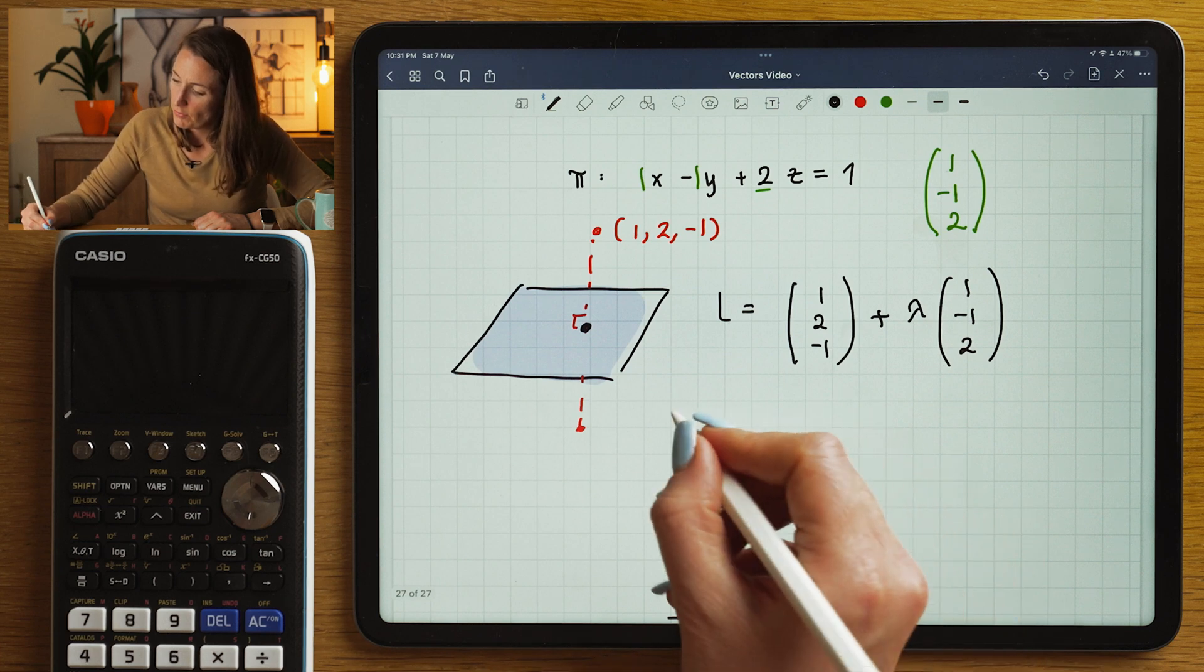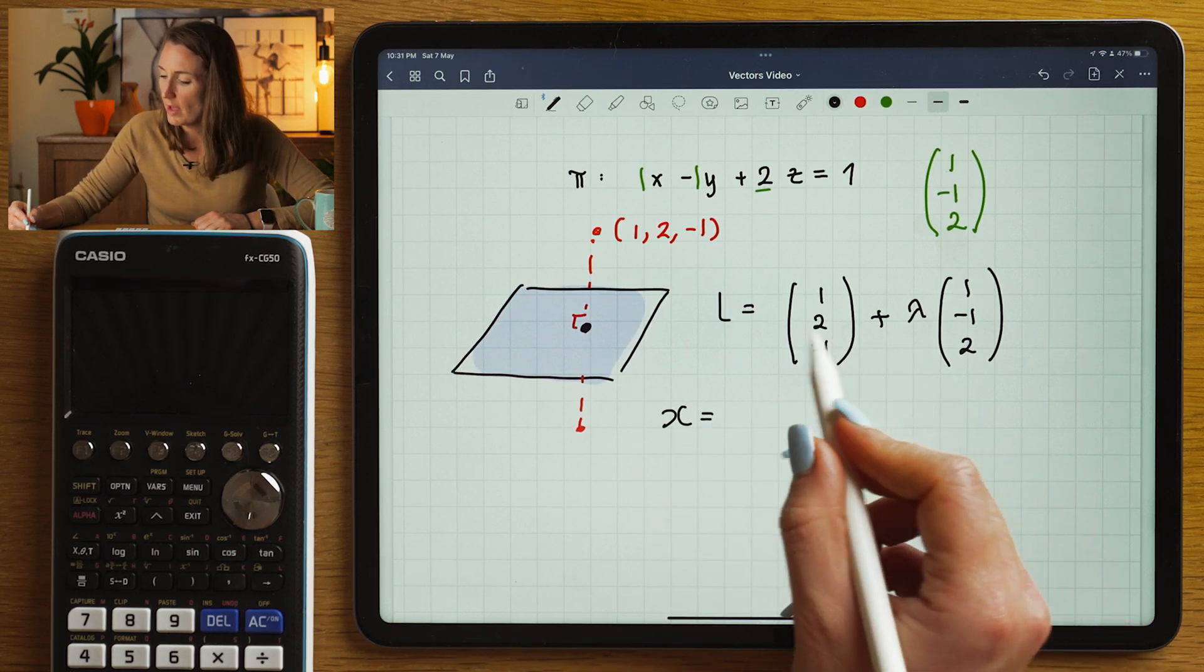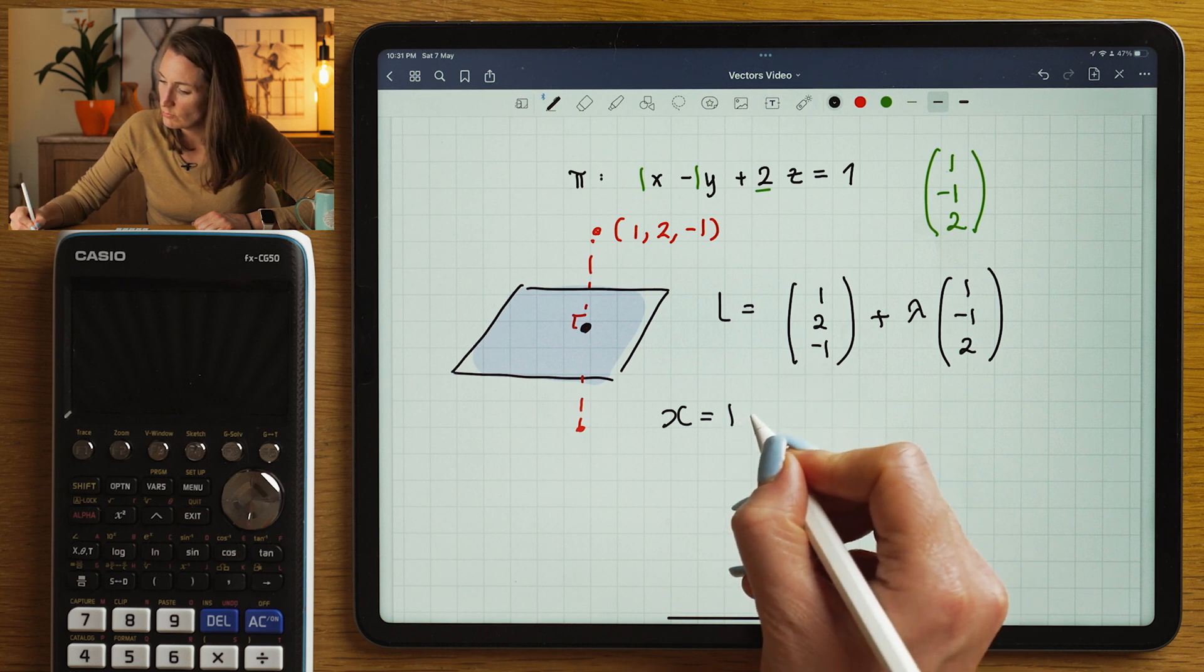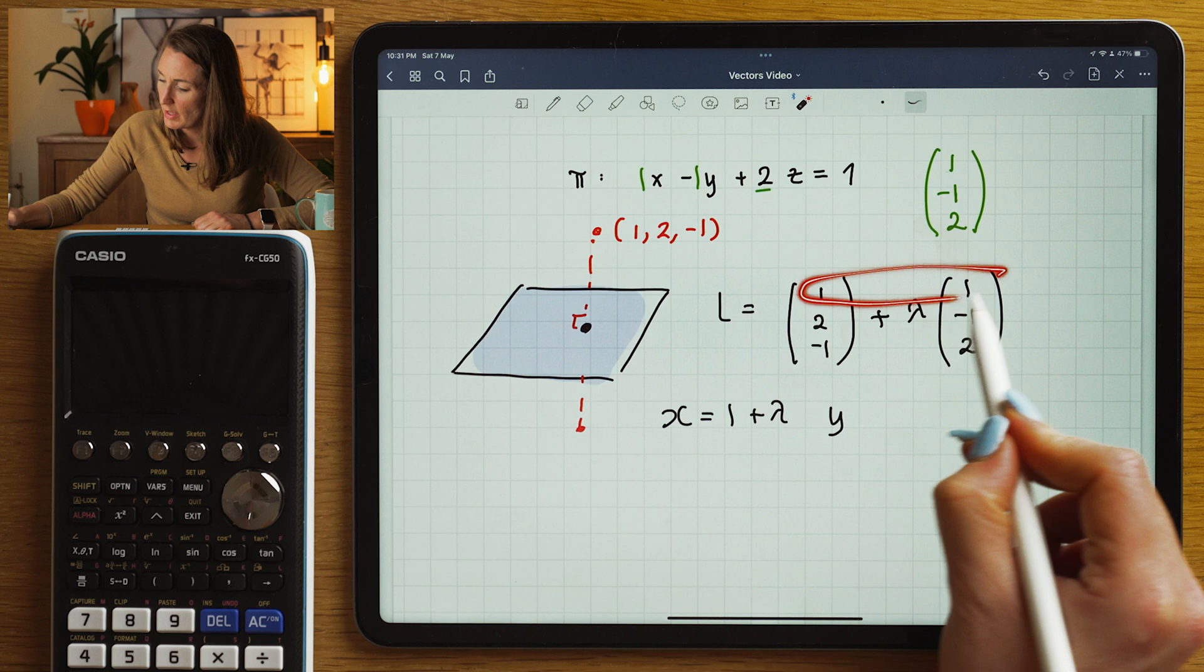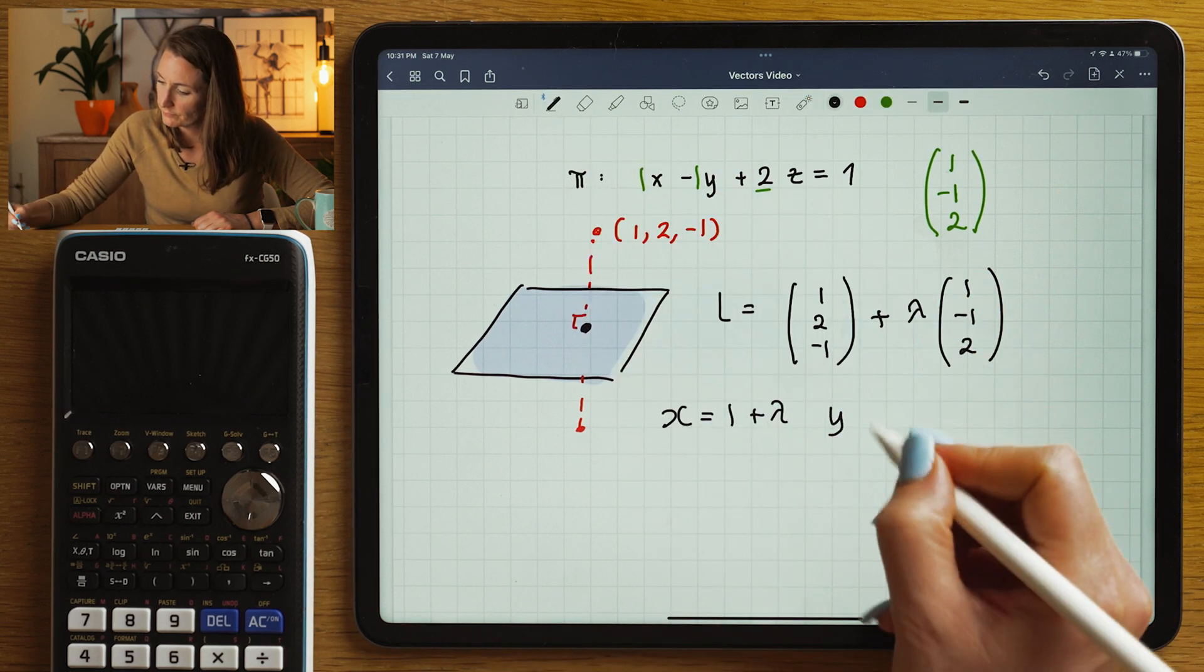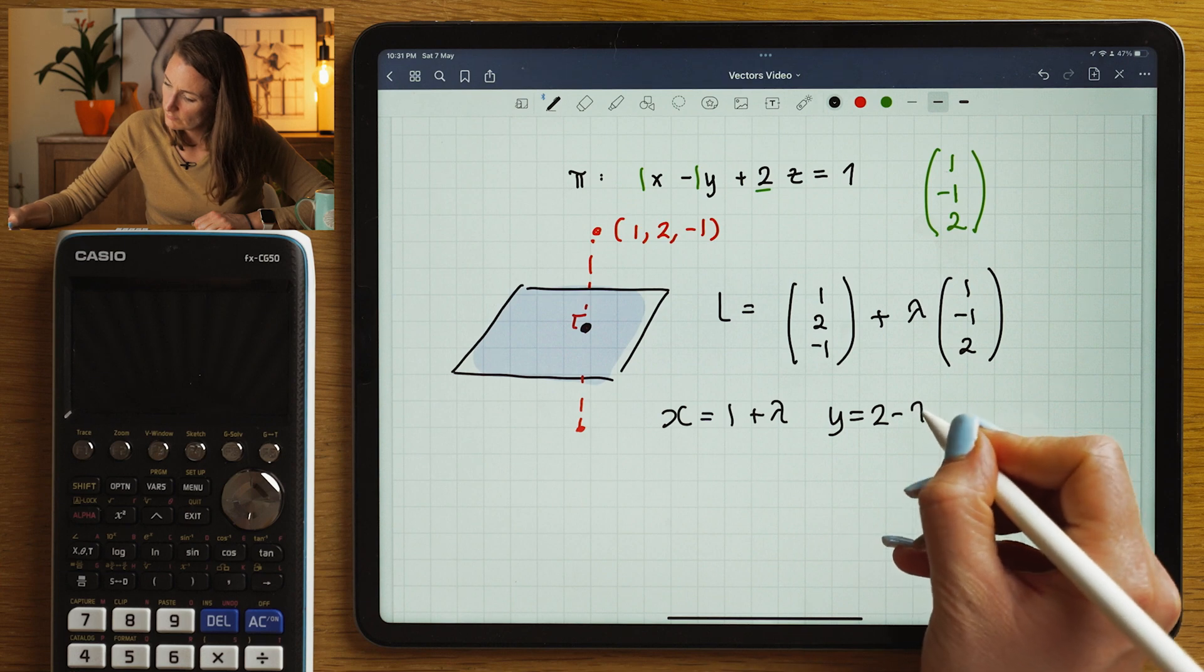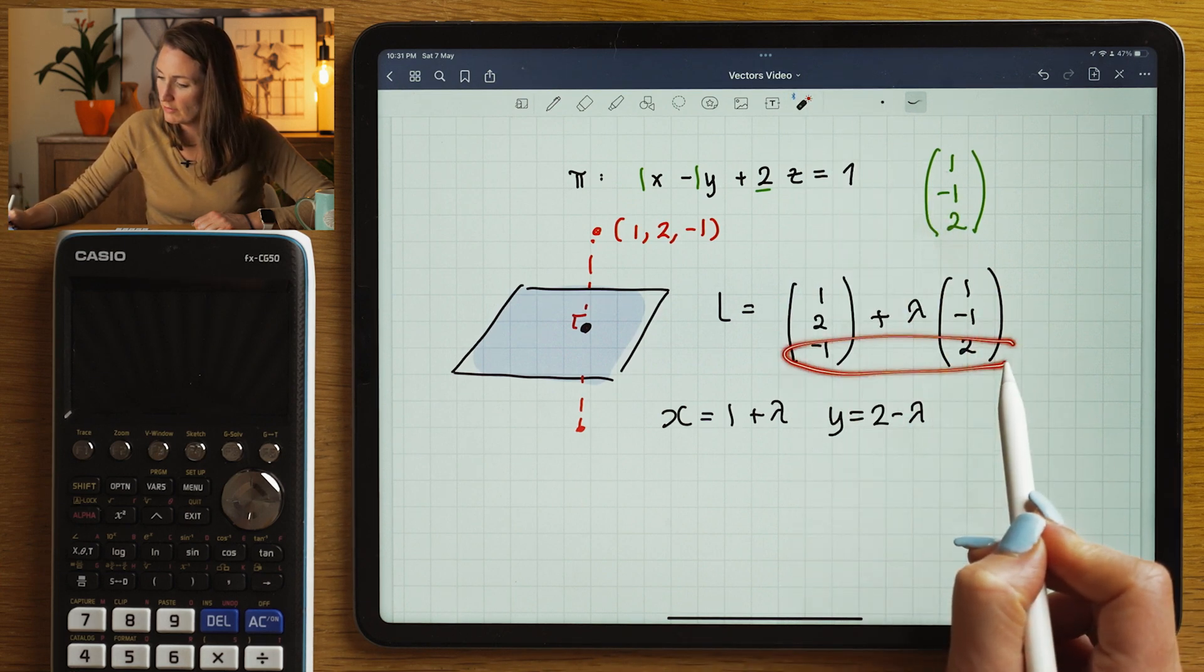So to intersect a point in a plane, I've used this trick so many times, you guys are probably really good at this now. But I'm going to set up the parametric equations, which is going to be 1 + lambda for x. This is going to be my x equation. 2 - lambda for y. And -1 + 2 lambda for z.